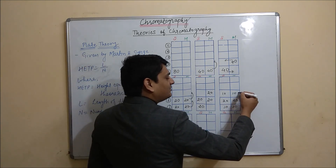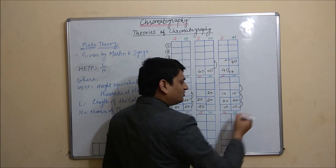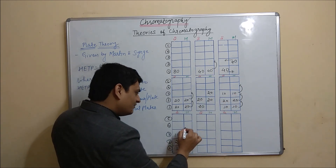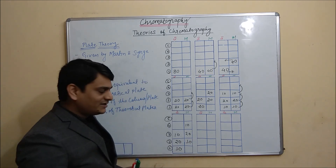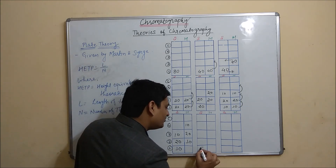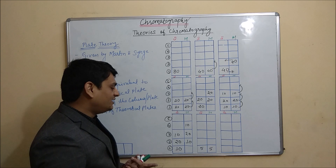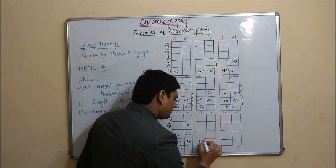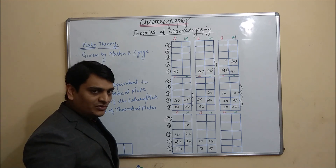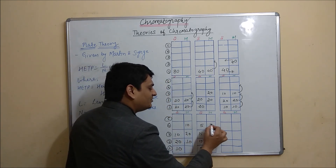In the next step, the third plate solute goes to the fourth, second goes to the third, and first goes to the second. The stationary phase remains with 10, 20, and 10 mg distribution. Equilibrium occurs again: the 10 mg is divided into 5 and 5. The 20 plus 10 equals 30 mg, divided by 2 gives 15 and 15 mg in stationary phase and mobile phase. The 10 mg is divided into 5 and 5.